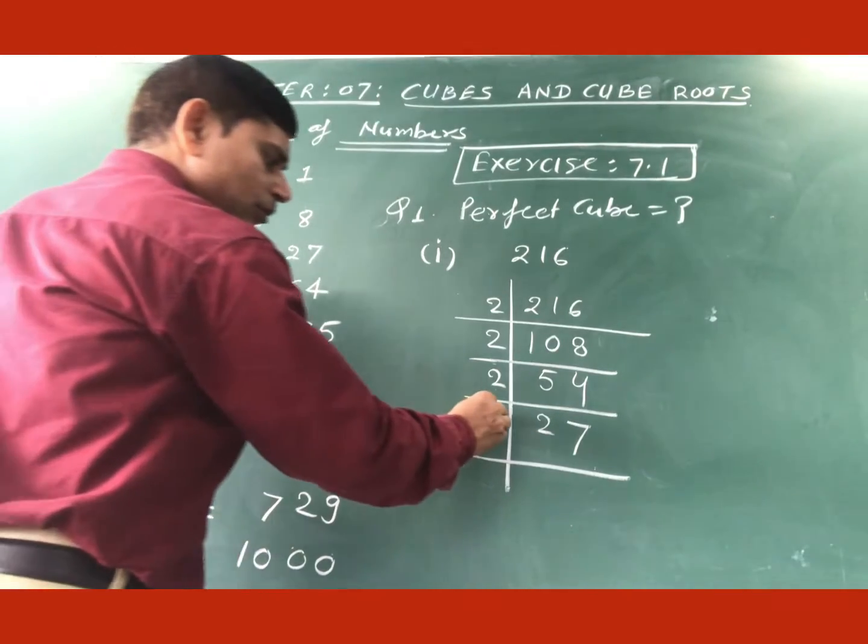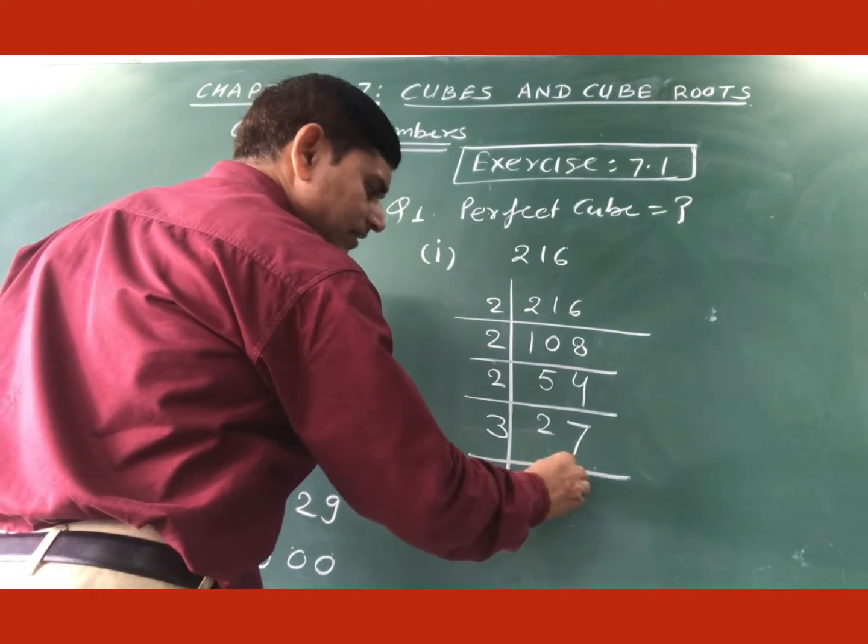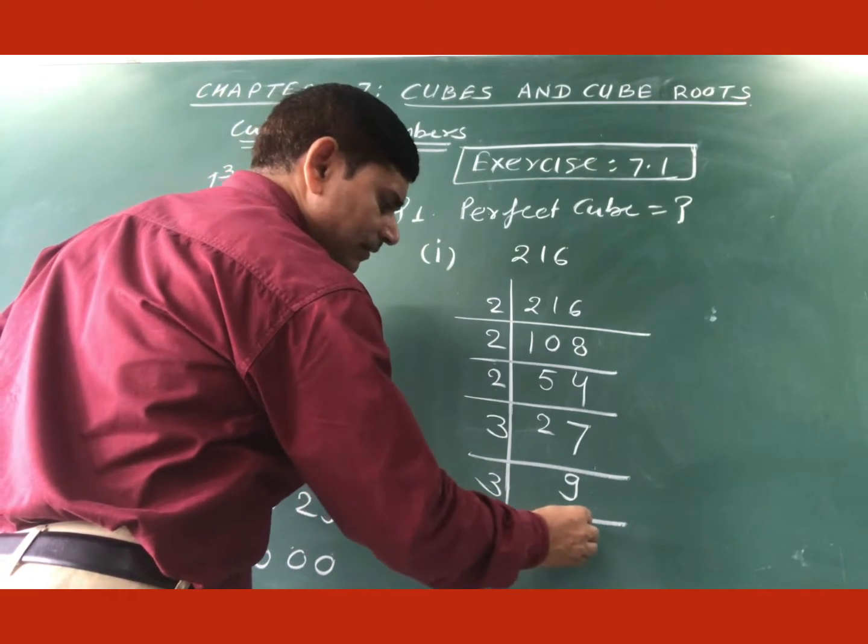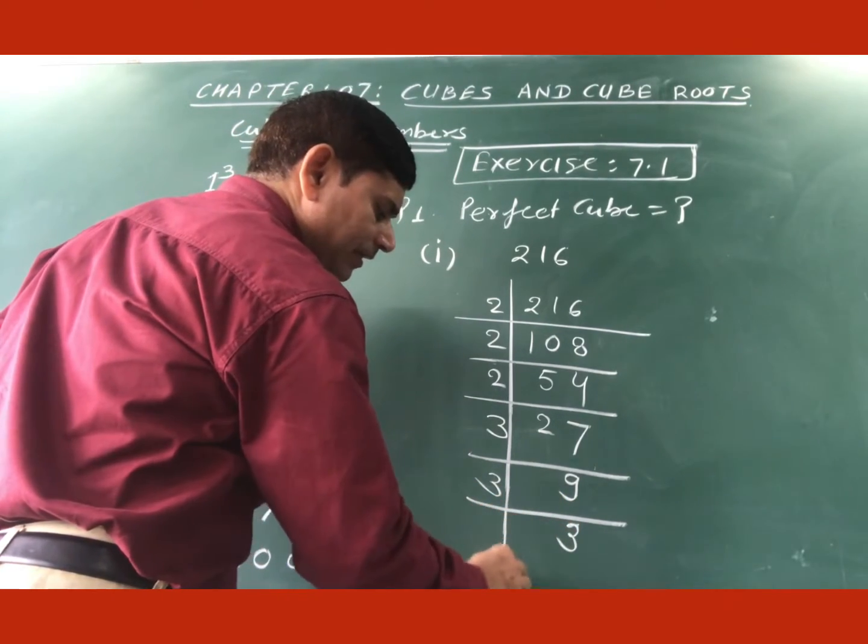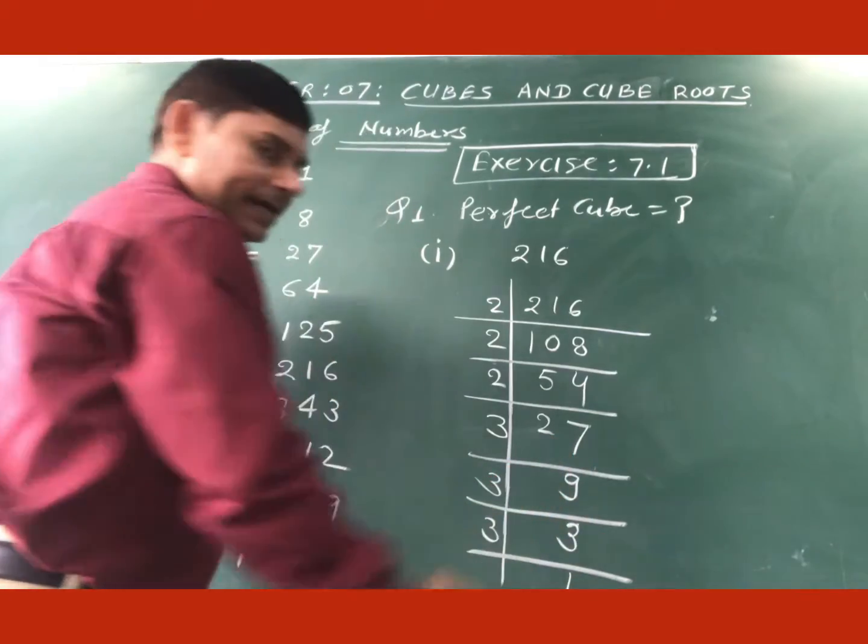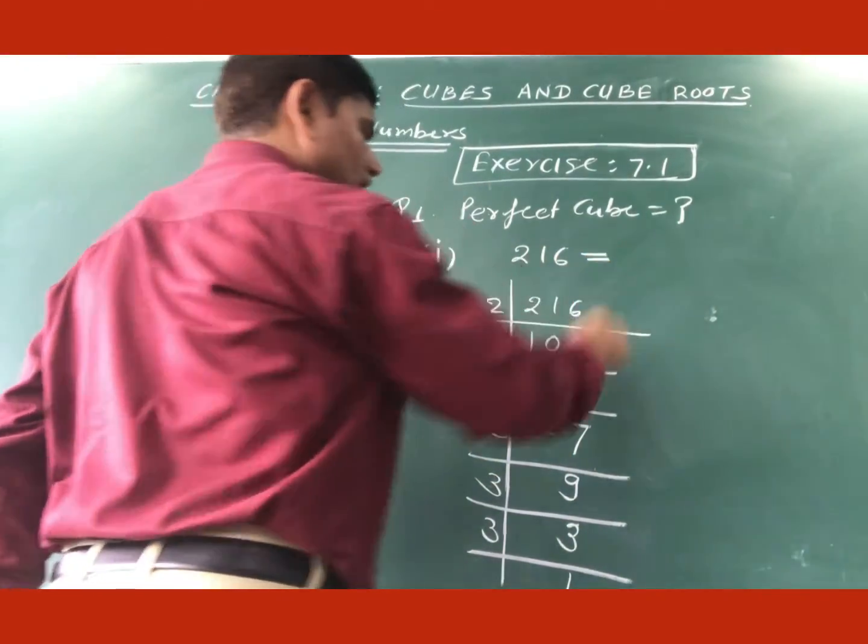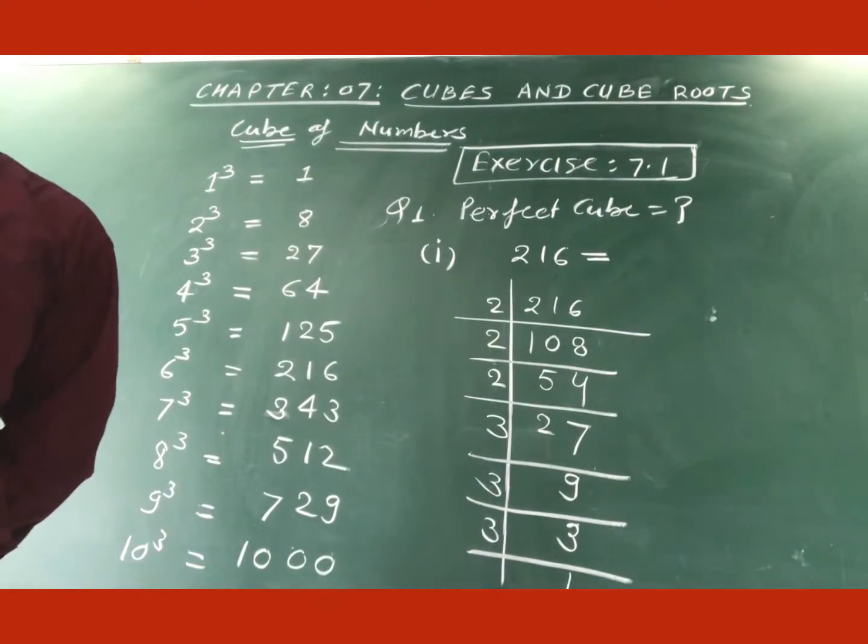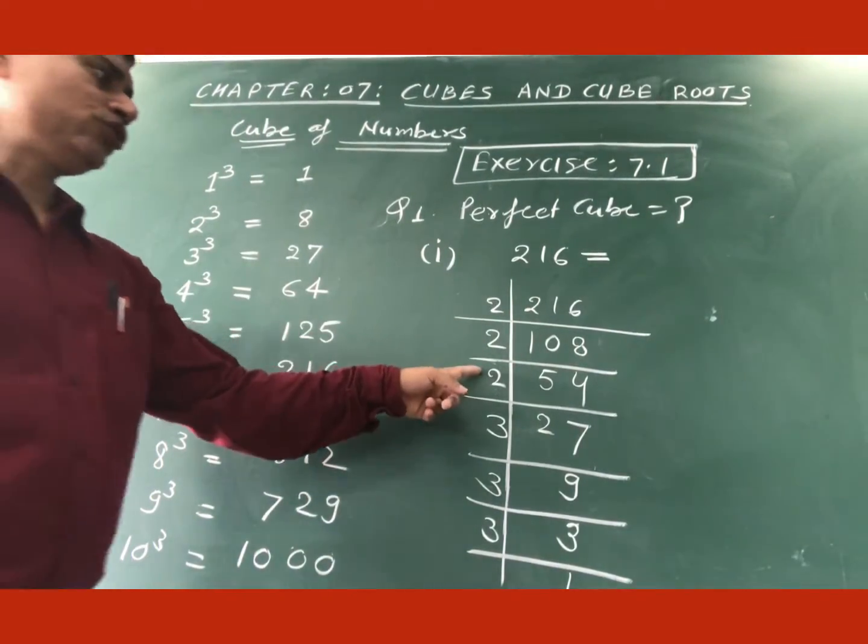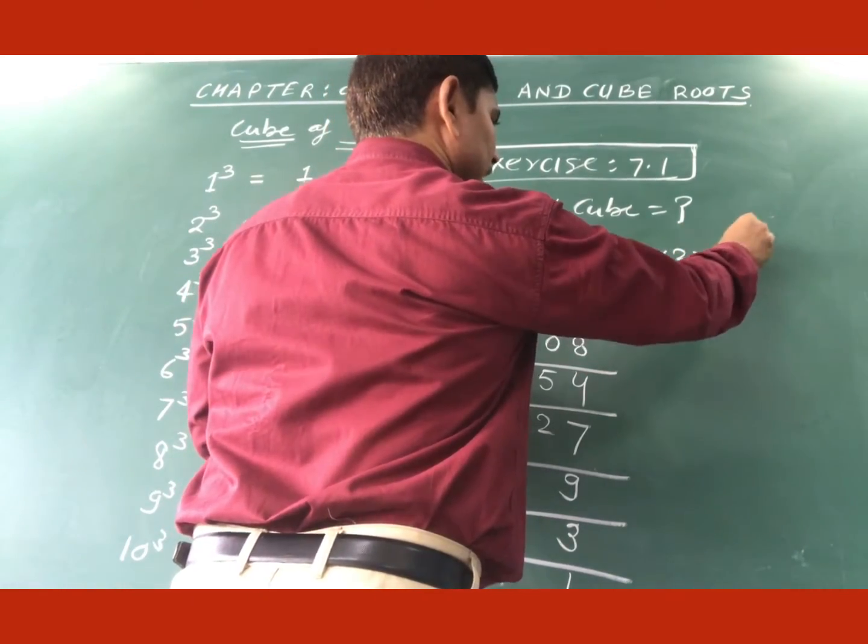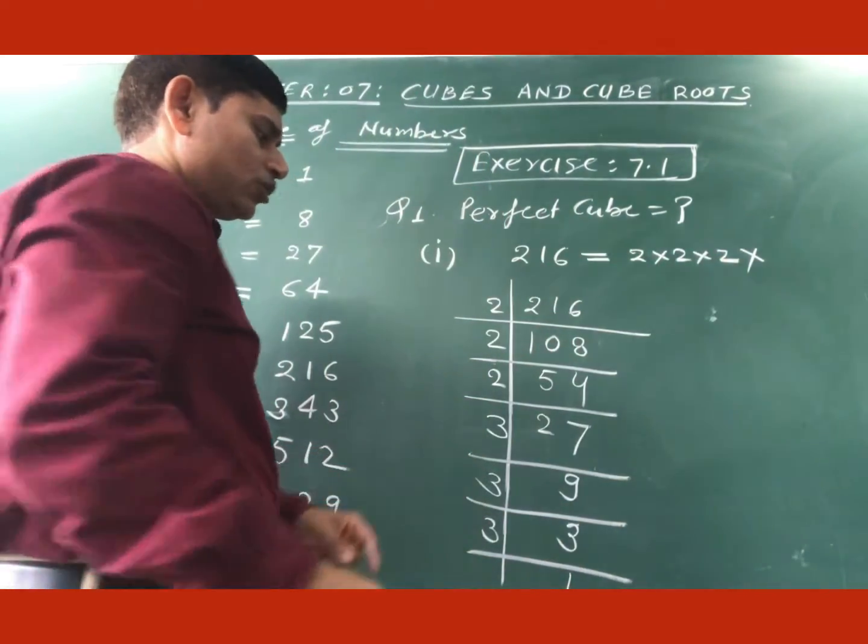That is 3. So 3, 3 times 9 is 27. And again by 3, then we get 3. And 1 more 3, then we get 1. So the factor of 216 is 2 three times and also 3 three times.